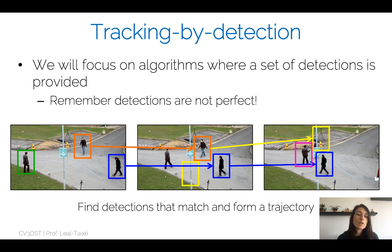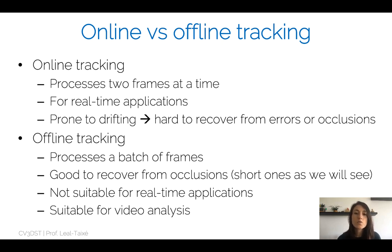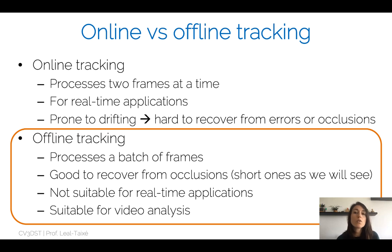This is what we're going to tackle in this lecture: how to perform data association and how to include learning in that step. In the last lecture we reviewed online tracking versus offline tracking. Online tracking processes frames in real time, you cannot look into the future, and it is prone to drifting — once you make an error it's hard to recover. In this lecture we focus more on offline tracking.